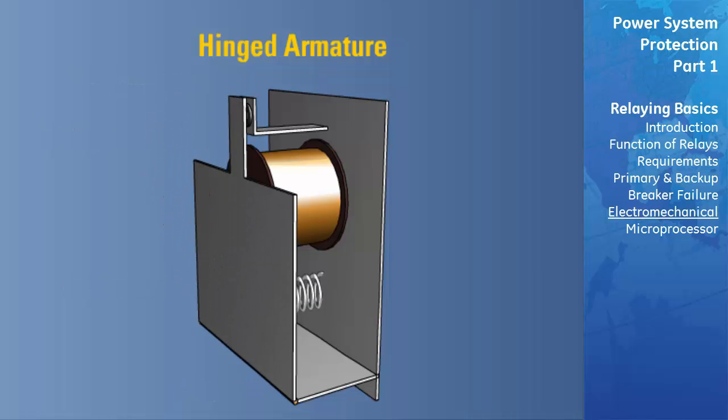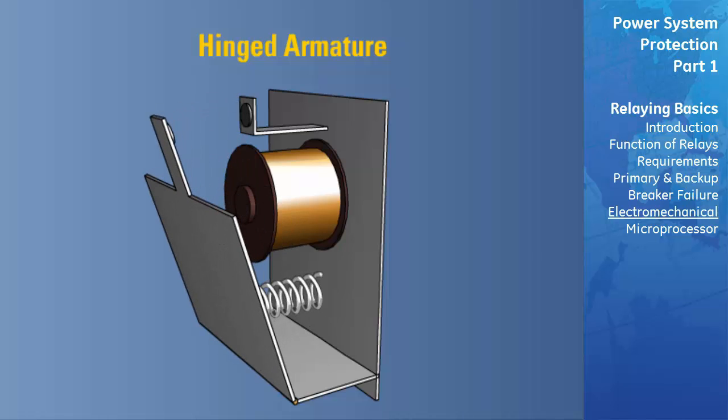As the hinged armature relays operate, the length of the magnetic air gap changes, resulting in a slightly greater force required to just pick up the armature than the amount of force that is required to release the armature. This translates into a difference in the amount of measured quantities for pick up and drop out, which is a slight impairment for this style of relay. This shortcoming also applies to the plunger style of construction, but to a lesser extent.